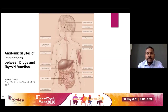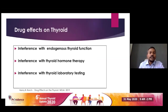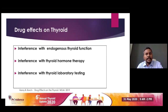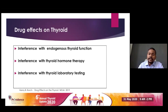At the intestine level, effects are mainly due to absorption of thyroxin being affected, and rarely you can have increased fecal excretion as well. From a functional point of view, drug effects on thyroid can be divided into three major classes: one is interference with endogenous thyroid function, second is interference with thyroid hormone therapy, and third is interference with thyroid laboratory testing. The first is the most common and most significant because it directly deals with endogenous thyroid dysfunction.